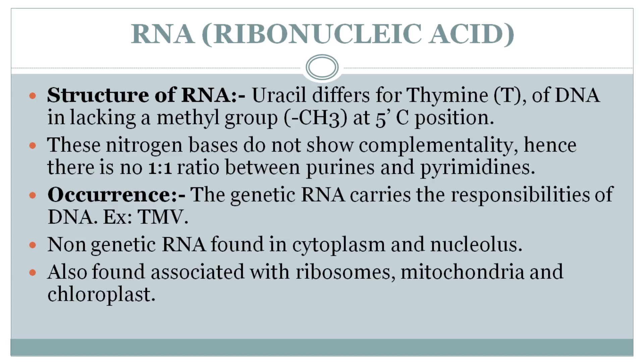These nitrogen bases do not show complementarity. Hence there is no 1 to 1 ratio between purines and pyrimidines, unlike in DNA. Genetic RNA carries the responsibilities of DNA — it is the genetic material in some cases, such as Tobacco Mosaic Virus (TMV), where RNA is the genetic material.